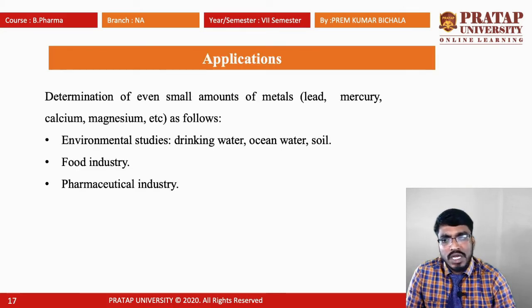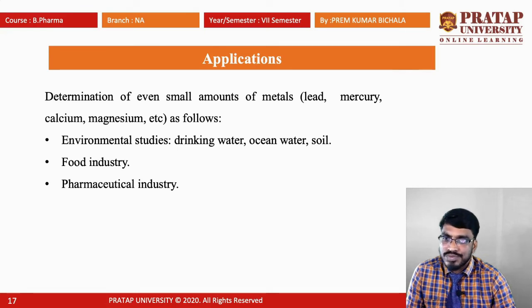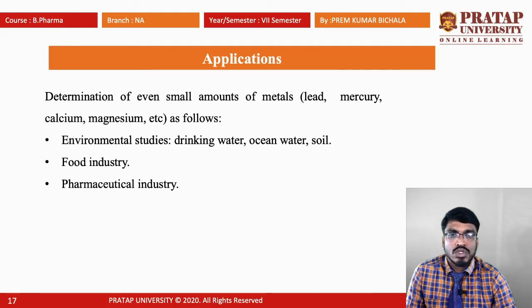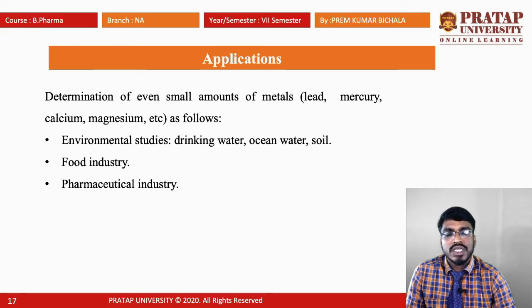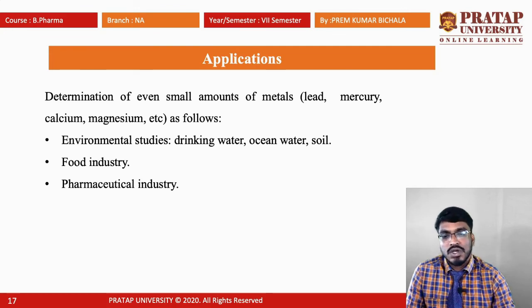Coming to the applications of the atomic absorption spectrometer. The determination of even small amounts of metals like lead, mercury, calcium, magnesium, etc. can be done for environmental studies — majorly drinking water, ocean water, and soil water are tested for the presence of unwanted metals. It may also be used in the food industry for the determination of small amounts of metals, and it is also used in the pharmaceutical industry.